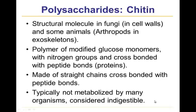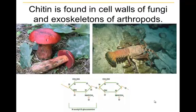If we look at raccoon scat along the San Pedro River, we may find exoskeletons of crayfish — a favorite food of raccoons — because raccoons cannot digest the chitin. This illustration shows a couple of mushrooms and a marine crustacean — this looks like a spiny lobster — and shows the actual modification of the glucose monomers in chitin, though we're not asking you to learn that level of detail.